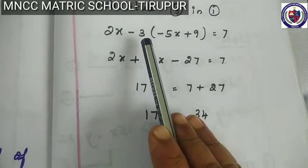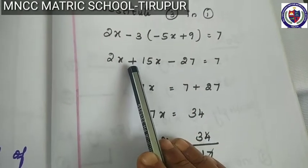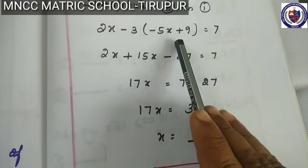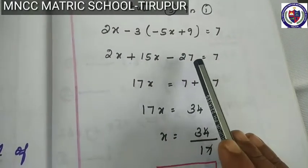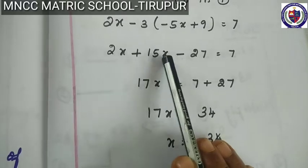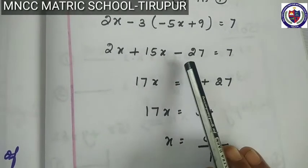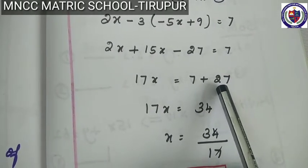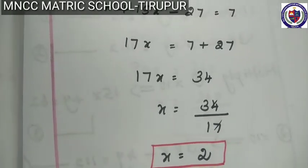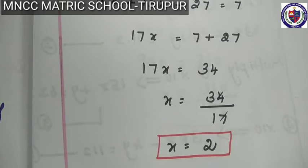So 2x minus 3 multiplied inside: minus 3 into minus 5x gives 15x, and minus 3 into 9 gives minus 27, is equal to 7. So 2x plus 15x minus 27 is equal to 7, giving 17x is equal to 7 plus 27, so 17x is equal to 34. Therefore x is equal to 34 divided by 17, so the value of x is equal to 2.